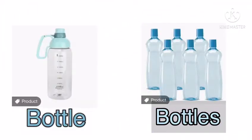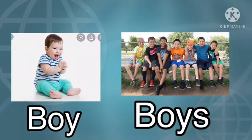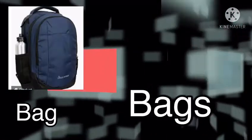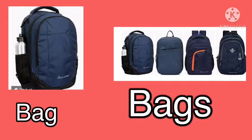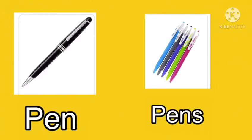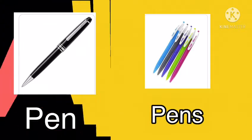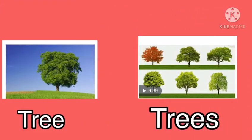Our first word is bottle, bottles. Second word is boy, boys. Next, one bag is there and these are the bags — pen, pens. And next word is tree — one tree is there and these are so many trees — tree, trees.